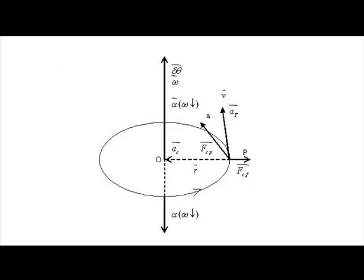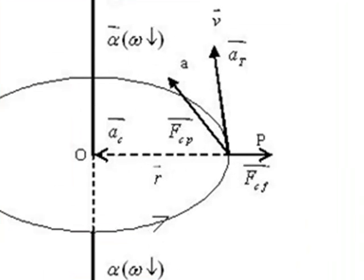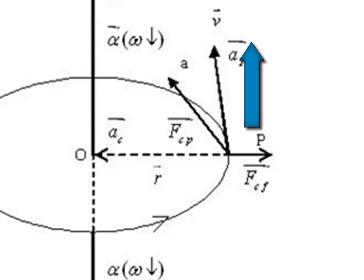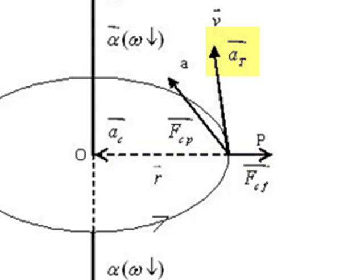Consider the body to be at position P. It is rotating in anti-clockwise sense. So, the direction of linear velocity is tangential to the circular path or perpendicular to the radius OP. The tangential acceleration AT is also directed along the direction of V. In that vector diagram, two directions — direction of linear velocity V and direction of tangential acceleration AT — are shown.